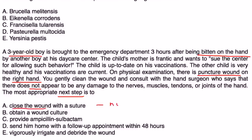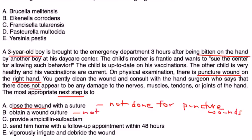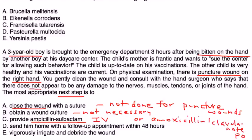Closing the wound with a suture is not done for puncture wounds, so that's wrong. Obtaining a wound culture is not really necessary — it's not going to change the treatment. Providing ampicillin-sulbactam IV is the correct choice; another option would be amoxicillin-clavulanate given orally. Sending him home with a follow-up appointment is incorrect. Vigorously irrigating and debriding the wound is not done for puncture wounds because there is an increased risk of causing a deep infection. So the correct choice is ampicillin-sulbactam.